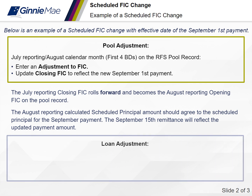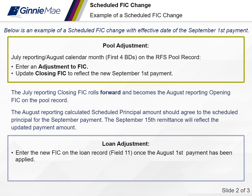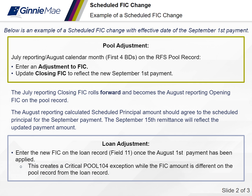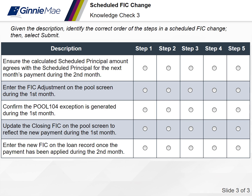For the loan adjustment: once the August payment has been applied, issuers will enter the new FIC on the loan screen. By entering a new FIC, a critical pool 104 exception will generate. The difference between the FIC on the pool and the loan is what causes that pool 104 exception. Please note that the pool 104 exception will remain for the month. Once the August payment has been applied, enter the new FIC on the loan screen.